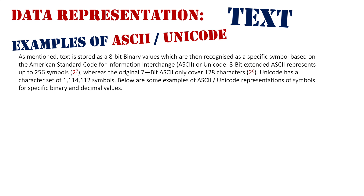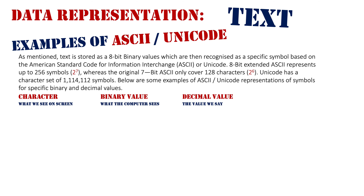Let's have a look at a few simple ASCII/Unicode representations of specific binary values. We're going to look at the character, the binary value, and the decimal value. The character is what we see on screen — what we want to see on screen, hence why we press that character on our keyboard. The binary value is what the computer sees, what it interprets in order to present that on screen. The decimal value is the binary value expressed in a way humans can easily read and say.